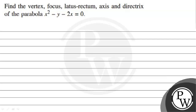Hello, let's read the given question. The question states: find the vertex, focus, latus rectum, axis, and directrix of a parabola x squared minus 4y minus 2x equal to 0.